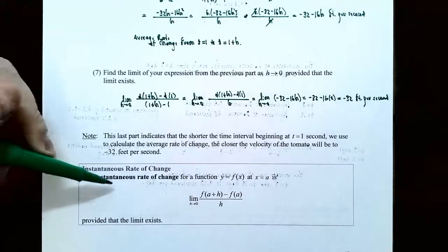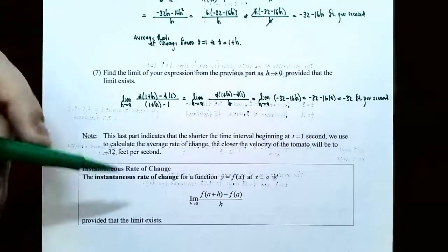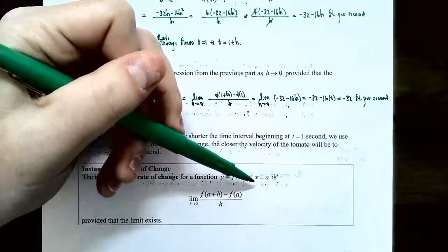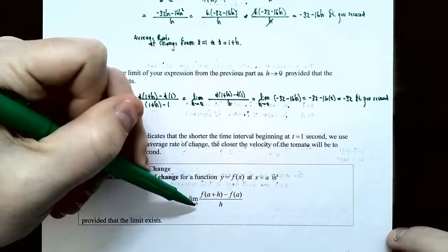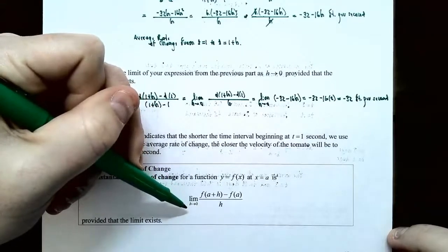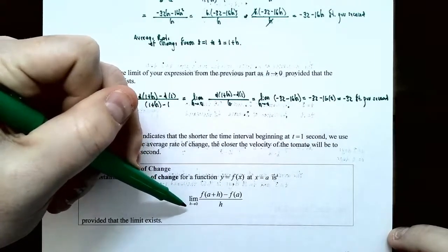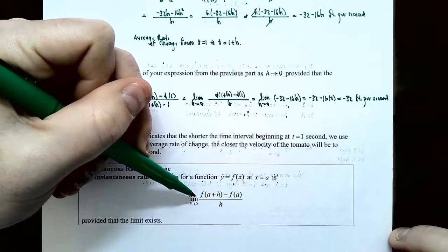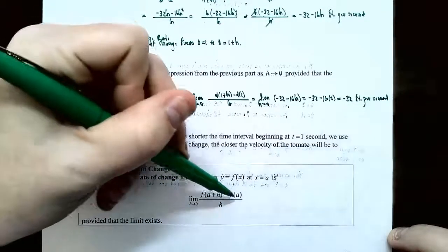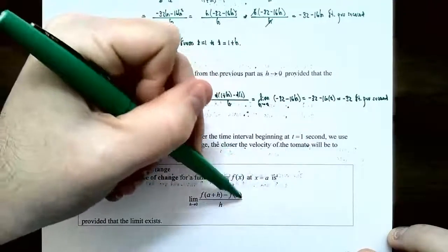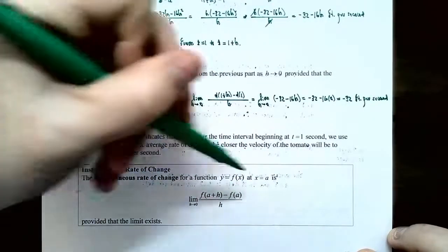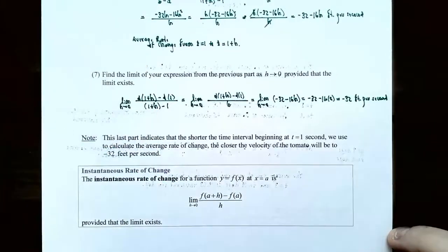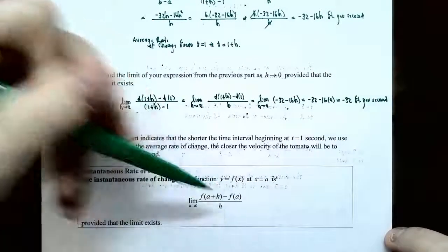The instantaneous rate of change for a function y equals f of x at x equals a — not a closed interval, just one particular x value — is defined as the limit as h approaches zero of f of a plus h minus f of a divided by h, provided the limit exists. This h is the unknown constant getting really, really small.